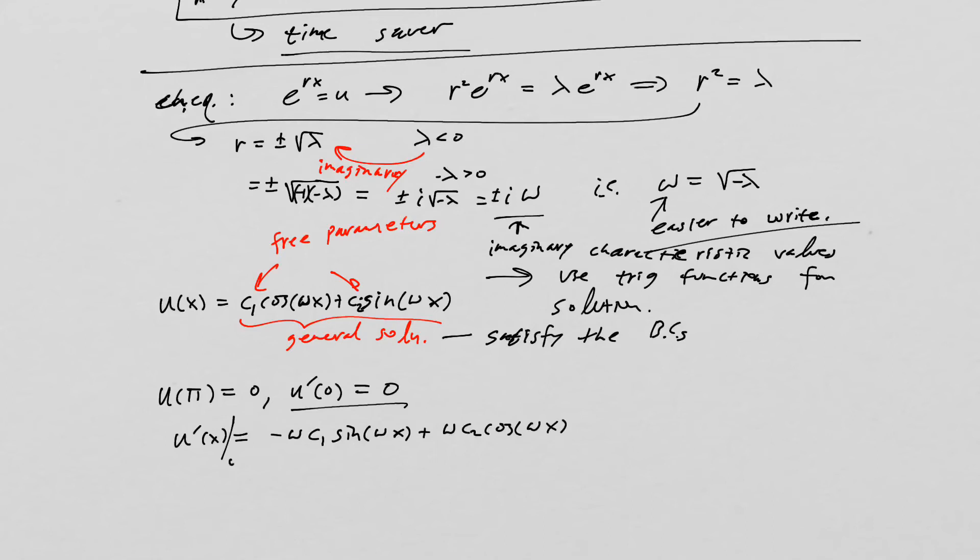And now we're going to evaluate at zero. And that's going to turn the first term will just disappear. But then we'll get the second term that says that c2 times omega times cosine of zero is equal to zero. That's just one. So that implies that c2 times omega is equal to zero. But we know that omega is positive. Therefore, c2 has to be zero. So that definitely helps us out.